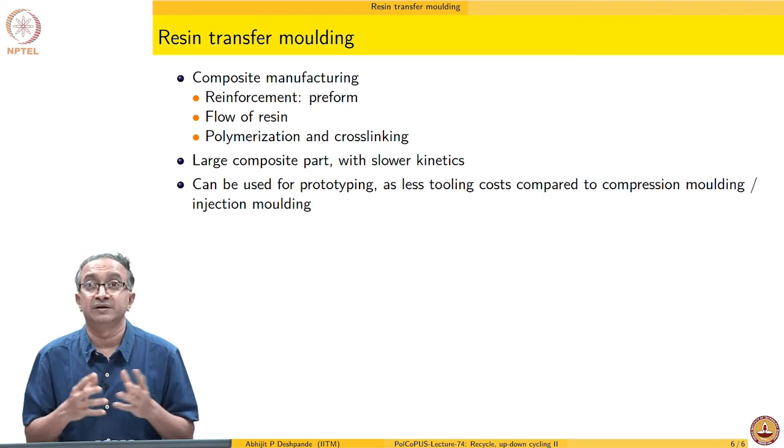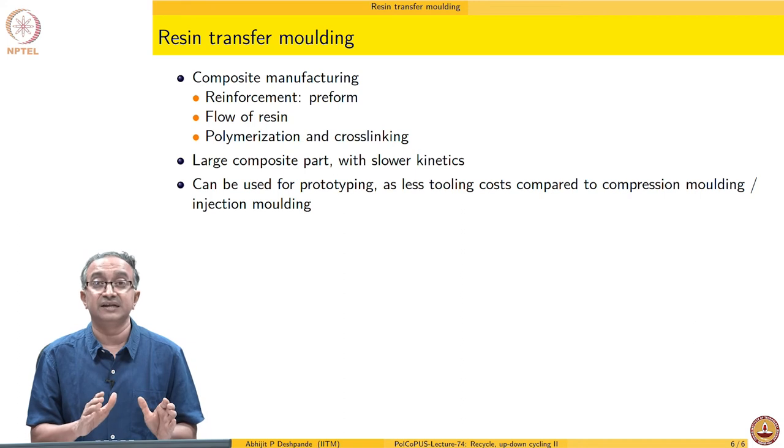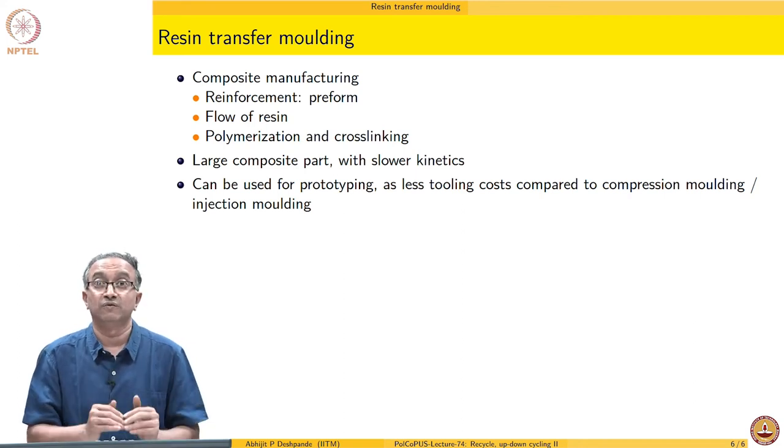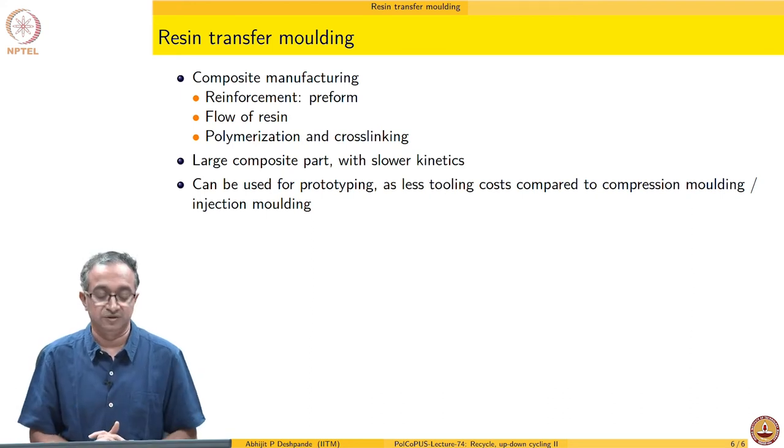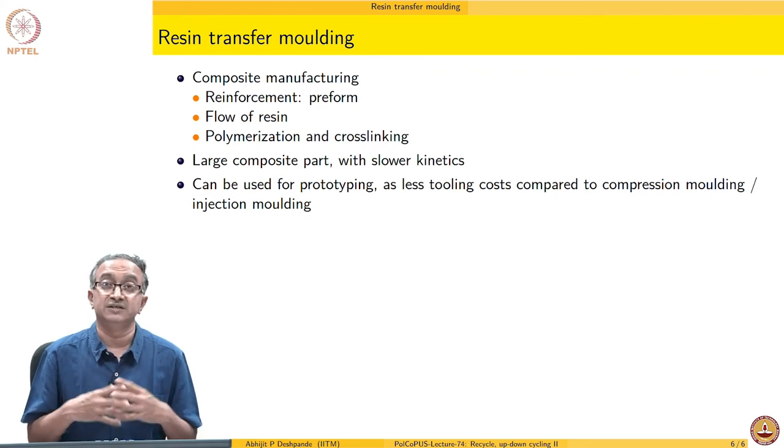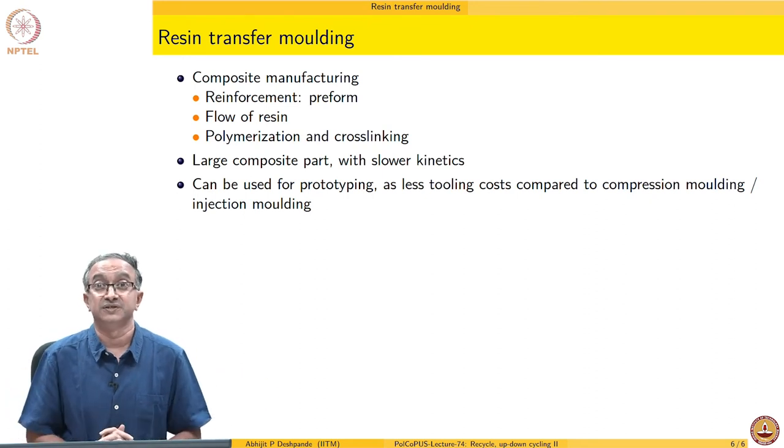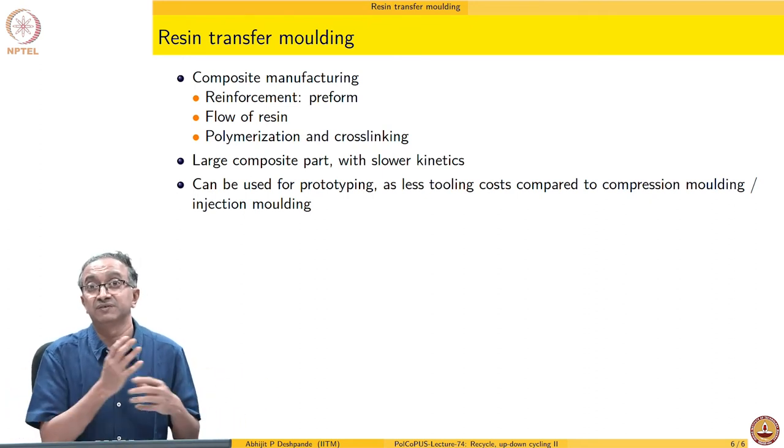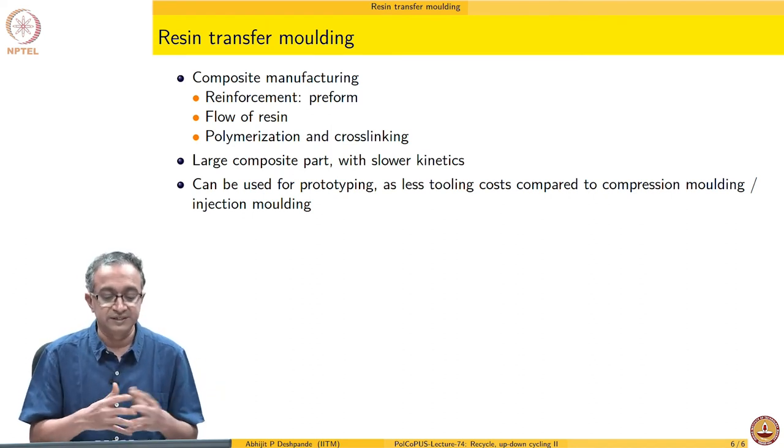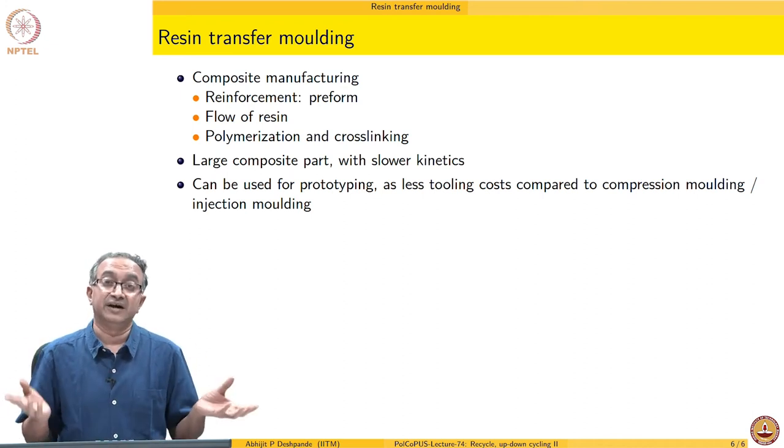This is used quite common in aerospace and defense applications. This is basically where composite manufacturing method where reinforcement is there, flow of resin is achieved and then polymerization and crosslinking happens. Generally, this is used for materials which are slower crosslinking because extremely large parts are processed this way. In reaction injection molding we are looking at small parts being molded and also complex shape while resin transfer molding can be of not as complex shapes but very large parts.